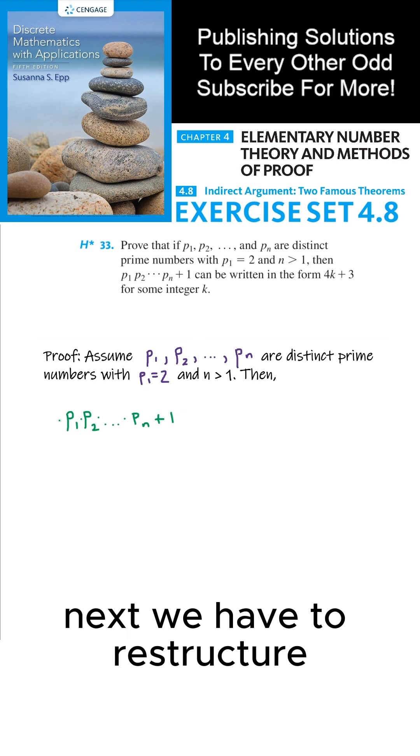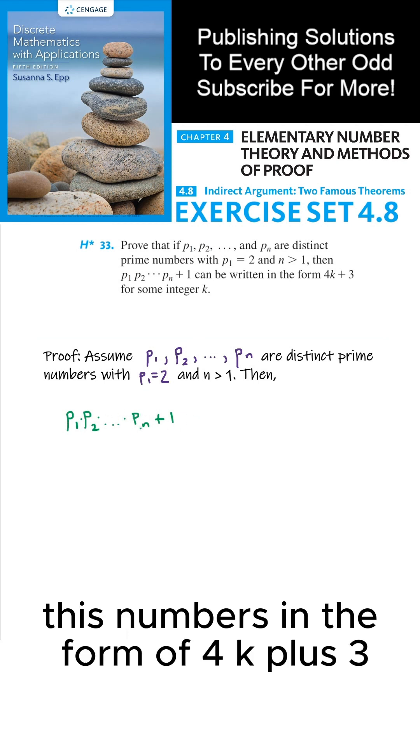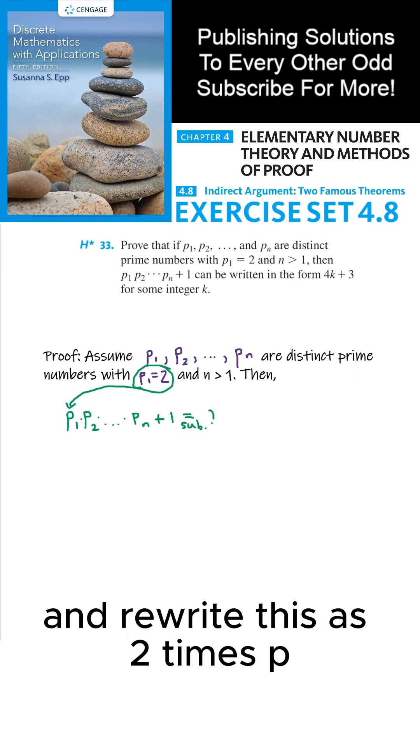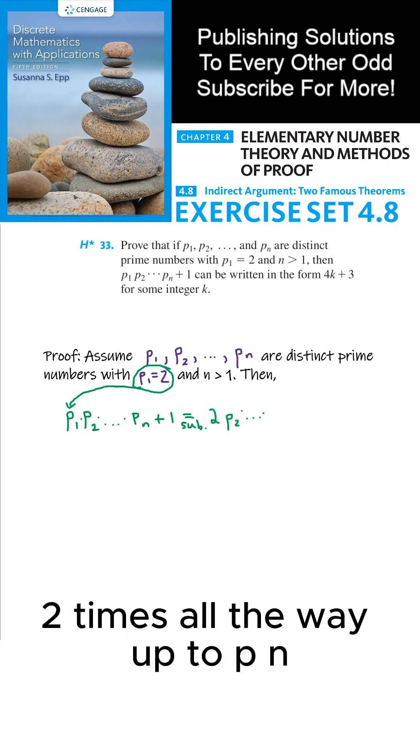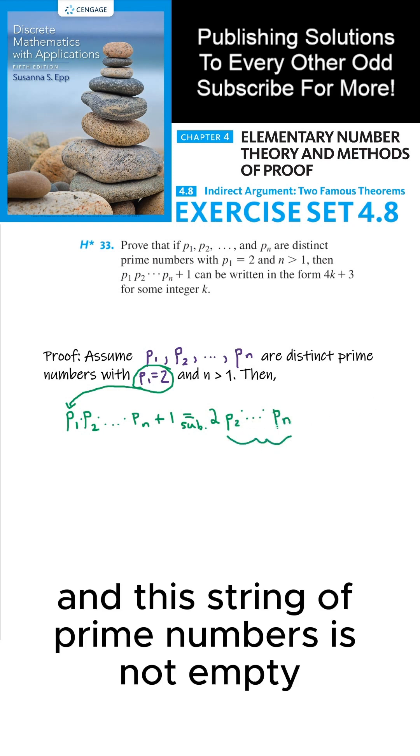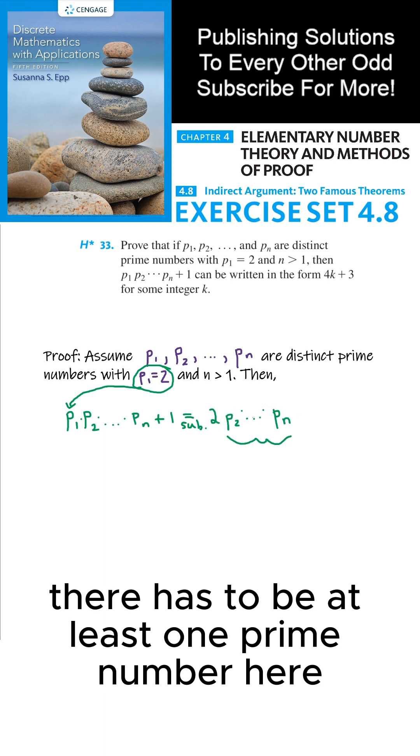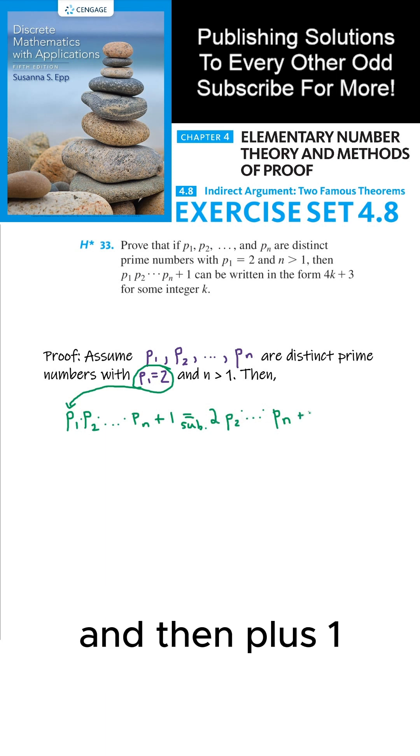Next, we have to restructure these numbers in the form of 4k plus 3, where k is some integer. Now by substitution, we can replace p₁ with 2 and rewrite this as 2 times p₂ times all the way up to pₙ. And this string of prime numbers is not empty, since n is strictly greater than 1. There has to be at least one prime number here, and then plus 1.